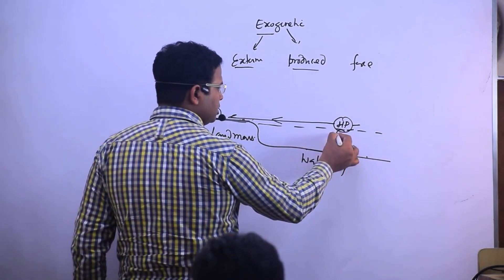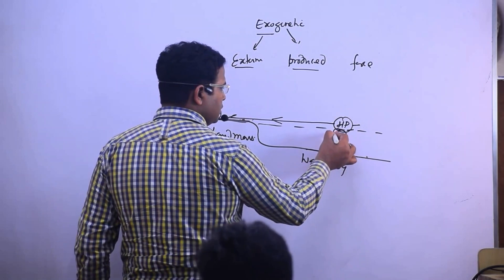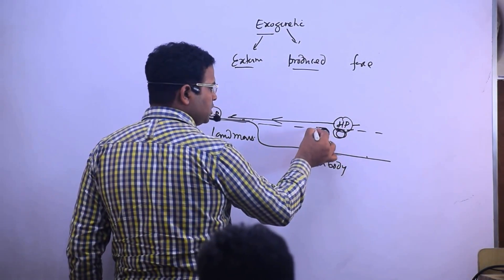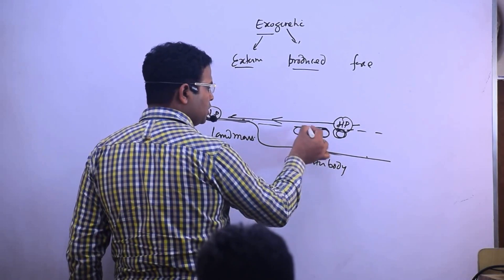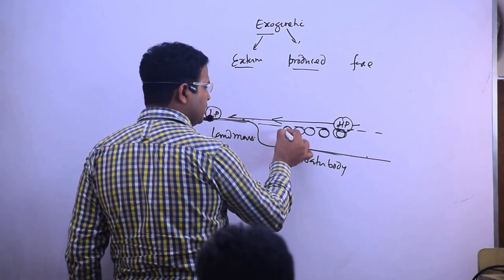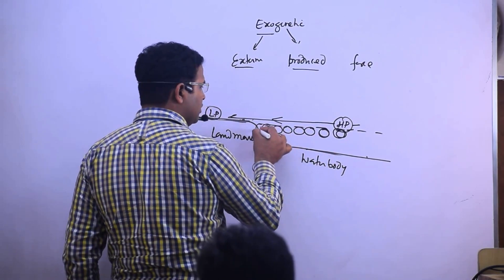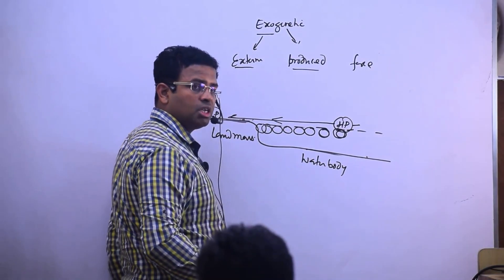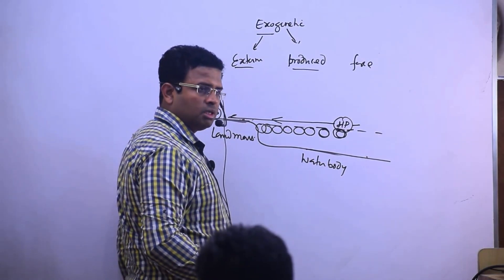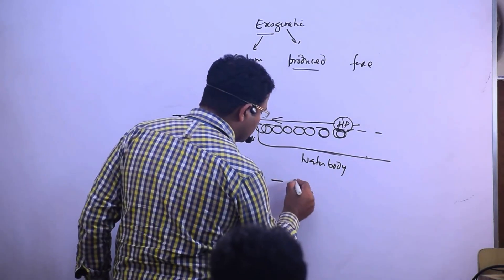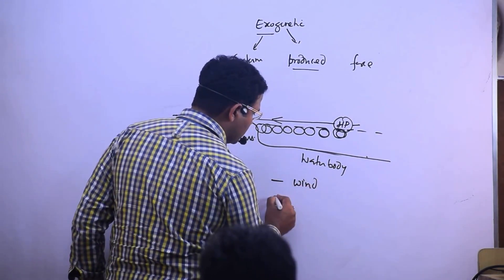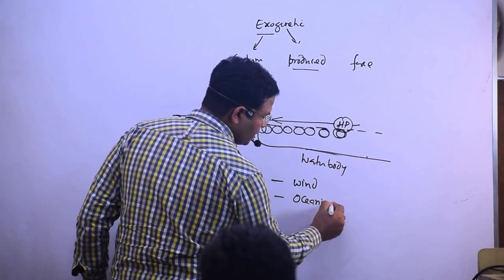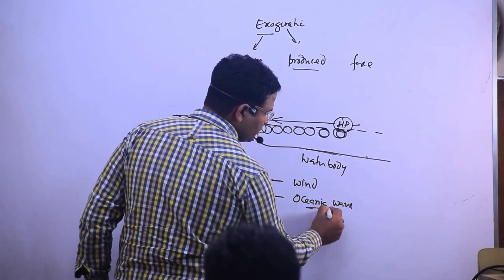When the wind starts moving, it will put friction onto the water, and when it puts friction onto the water, water waves will form and come to the coast — that is the formation of oceanic waves. So one force is wind and another force is oceanic wave.